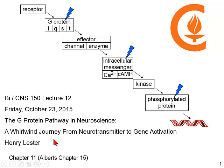We're going to do a whirlwind version of the G-protein pathway today. It goes all the way from receptors through G-proteins to effectors to intracellular messengers to kinases to phosphorylated proteins, and if it stays activated for long enough, to gene activation. This map will appear on most of the images today. The blue lightning bolts indicate where high-energy phosphate bonds are manipulated, made, or broken. Each of the boxes has several sub-boxes because there are several genes that can come into play at each stage in this pathway.